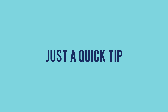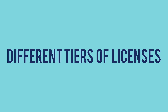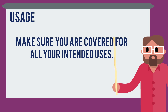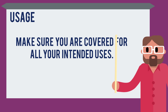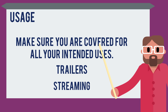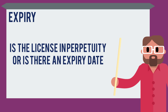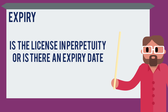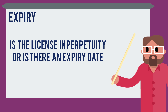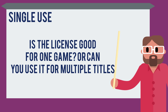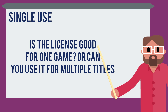A quick tip if you decide to go this route: when purchasing these types of licenses, it's normal for the content provider to have different tiers of licenses. Here are a few things to look out for. Usage: make sure you're covered for all your intended usage — a developer might purchase a license for video game use but overlook other uses like ads, trailers, or streaming, which can fall under different or extended licenses. Expiry: is the license in perpetuity, or is there an expiry date? We've seen games have to change their music because of license expiries. Single use: is this license only good for one game, or can you use it for as many games as you're making? This is important if the song could become the iconic sound for your franchise.